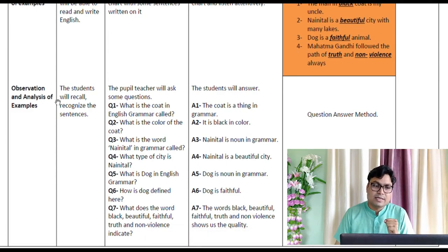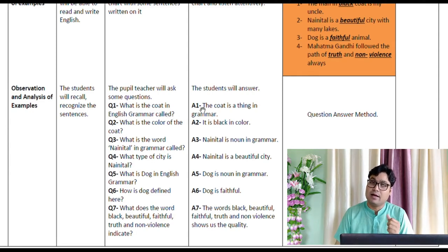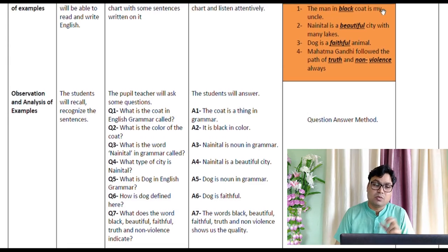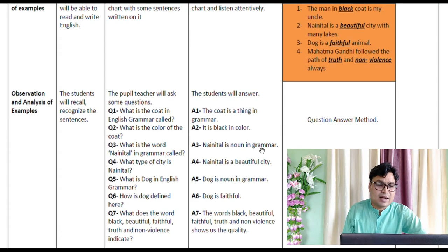The second point is observation and analysis of the examples. The student is expected to recall and recognize the sentences asked previously. The teacher will ask questions like: 'What is the coat in English grammar?' — taking the sentence 'The man in the black coat is my uncle.' The coat is a thing, so it is a noun. Then: 'What is the color of the coat?' — the answer is black. Then: 'What is Nainital in grammar?' — students answer that Nainital is a noun.